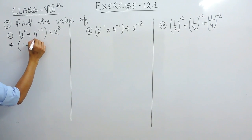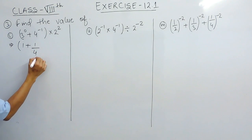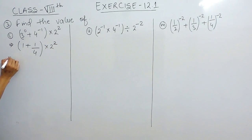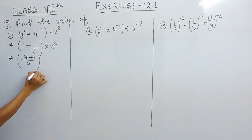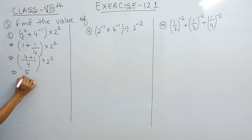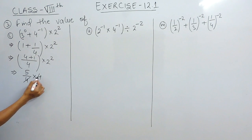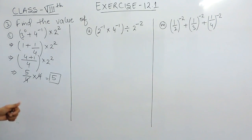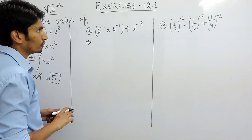This gives us 1 raised to power 4 and 2 raised to power 2. Further solving, we take the LCM: this becomes 4 plus 1, raised to power 2 raised to power 2, which equals 5 over 4, times 4. The 4 cancels out, so our answer is 5.